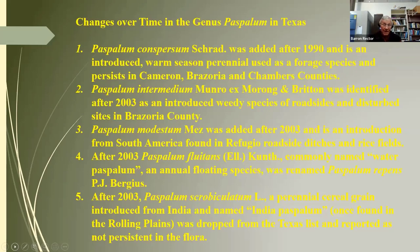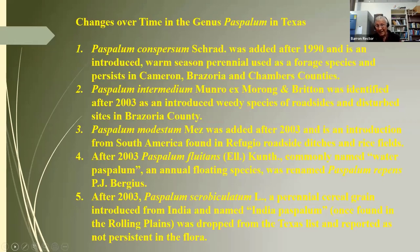After 2003, the name Paspalum fluitans was changed and combined with two other groupings to become Paspalum repens — an example of a name change. Paspalum scrobiculatum, a perennial cereal introduced from India called 'India paspalum,' was known in the Rolling Plains but after 30 years the plant had not persisted as a cereal crop and has been dropped from the list of Texas Paspalum today.